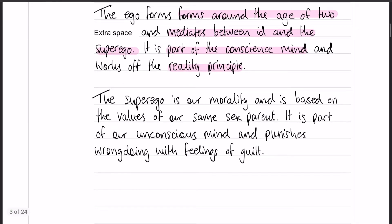Finally, we have the superego. The superego is our morality, and it is based on the values of our same-sex parent. It's part of our unconscious mind, and it punishes us with feelings of guilt. I didn't talk about the fact that it emerges around the age of five, or that it emerges in the phallic stage after the resolution of the Oedipus complex or the Electra complex — but that would also have been fine. These are all details you could potentially have added in.